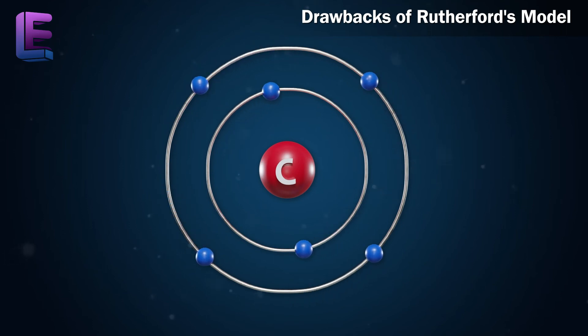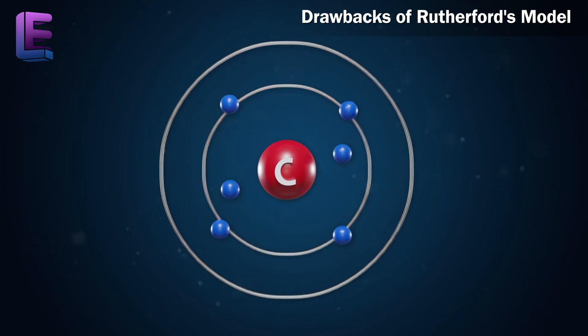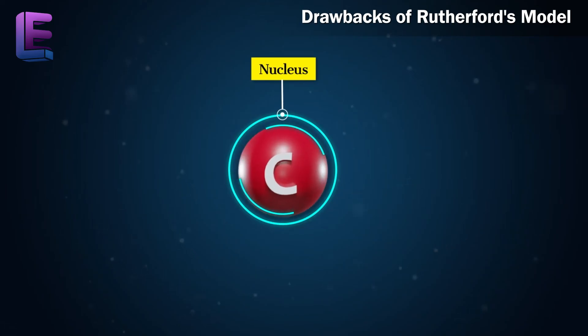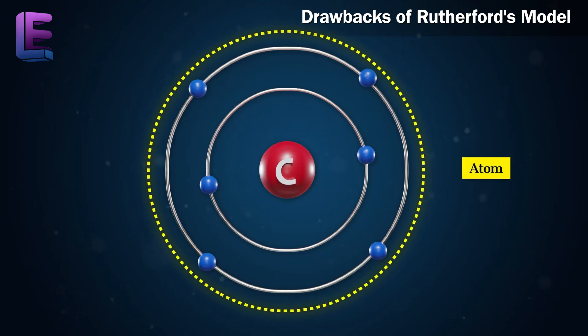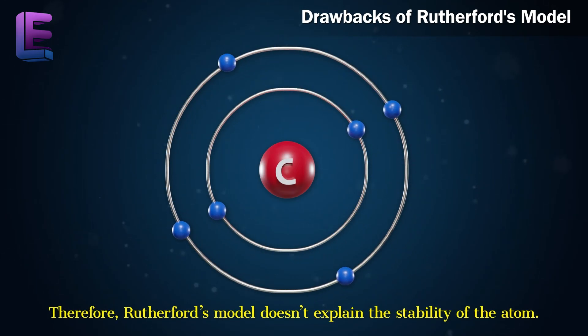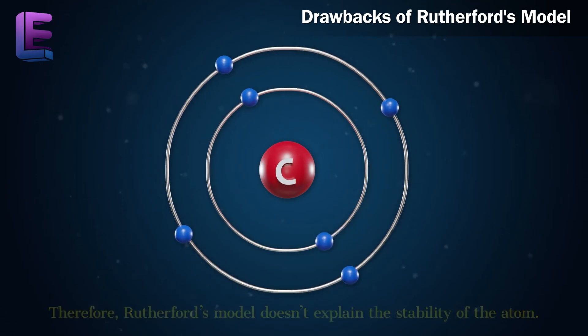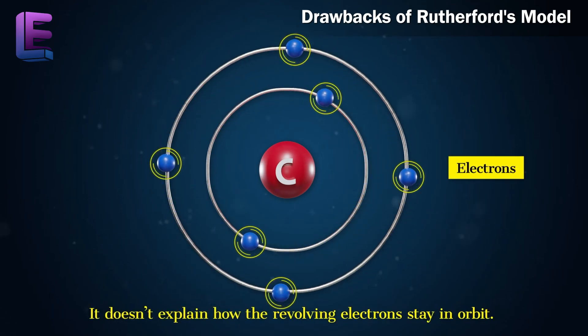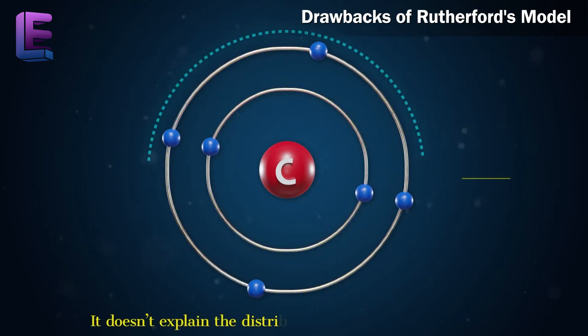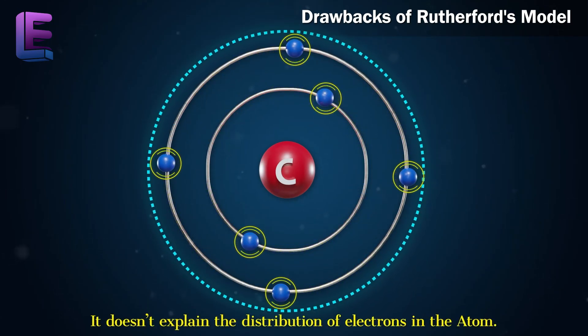They would lose energy and their orbits would reduce, leading the electrons to spiral into the nucleus resulting in the collapse of the atom. However, this doesn't occur and the atom remains stable. Therefore, Rutherford's model doesn't explain the stability of the atom. It doesn't explain how the revolving electrons stay in orbit or the distribution of electrons in the atom.